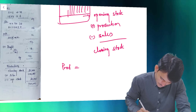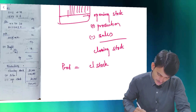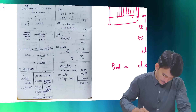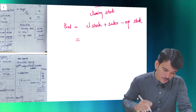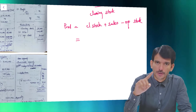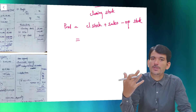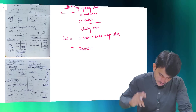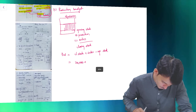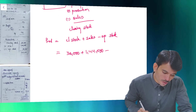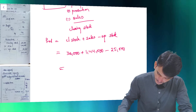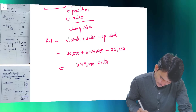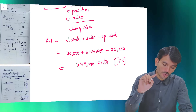Closing stock for finished goods is 30,000. Sales - from part one - is 1 lakh 44,000 units. Minus opening stock of 25,000 units. So production will be 1 lakh 49,000 units of finished goods. That completes the second part of the answer.